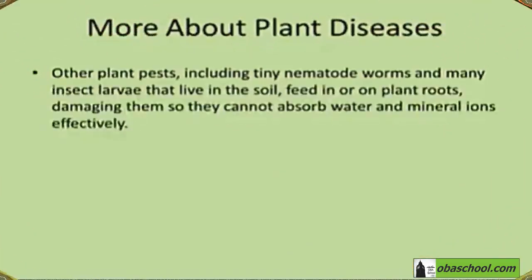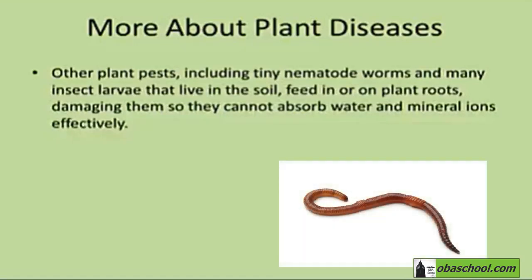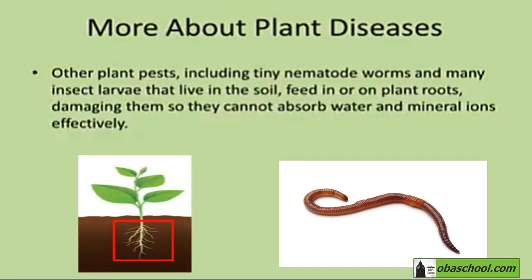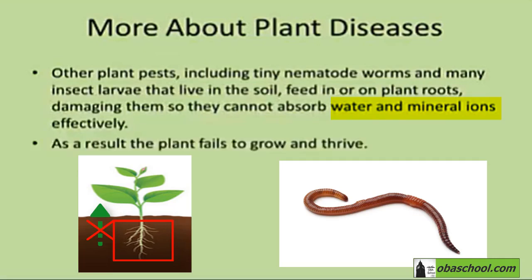Other plant pests, including tiny nematode worms and many insect larvae that live in the soil, feed in or on plant roots, damaging them so they cannot absorb water and mineral ions effectively. As a result, the plant fails to grow and thrive.